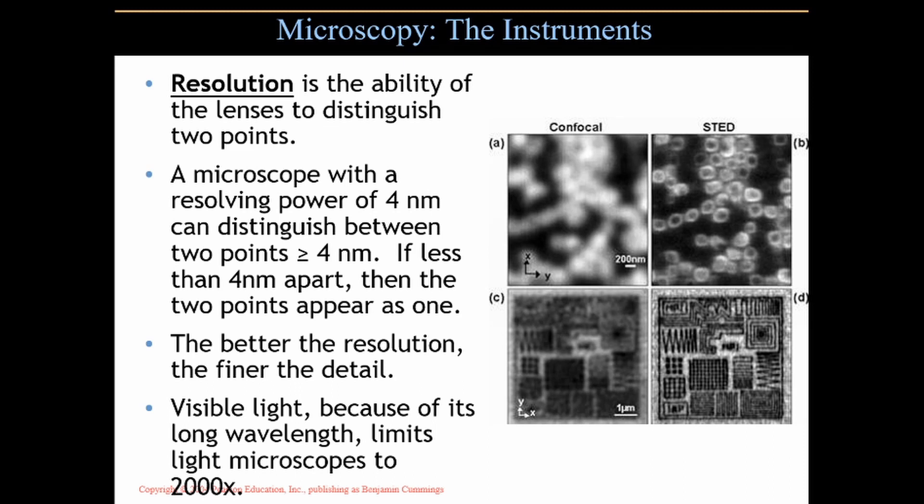Visible light, because of its long wavelength, limits light microscopes to 2,000x. We can make lenses that magnify beyond 2,000x, but light itself becomes the limiting factor — no matter how good your lens is, you can't really get above 2,000x with visible light. It's not the lens at that point, it's the light. There are ways to magnify greater than that, which we'll talk about in a few minutes.